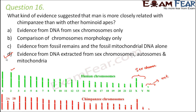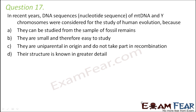All of these suggest that man and chimpanzee are closely related — autosomes are almost similar except for chromosome number two, sex chromosomes are quite similar, and mitochondrial DNA is also quite similar. Question number 17. In recent years, DNA sequences — nucleotide sequence of mitochondrial DNA and Y chromosomes — were considered for the study of human evolution.